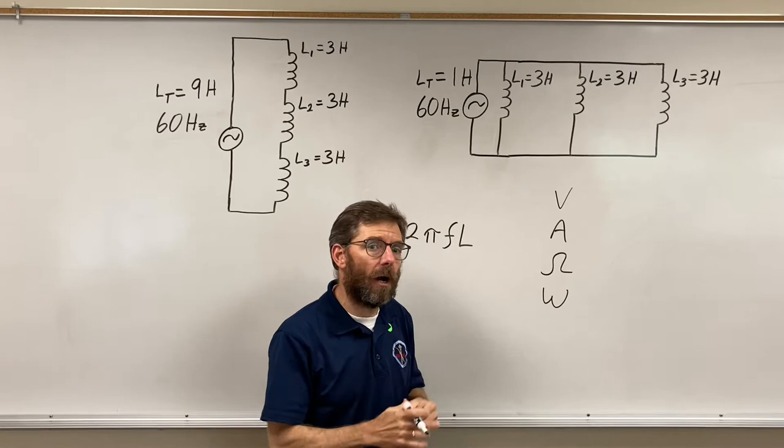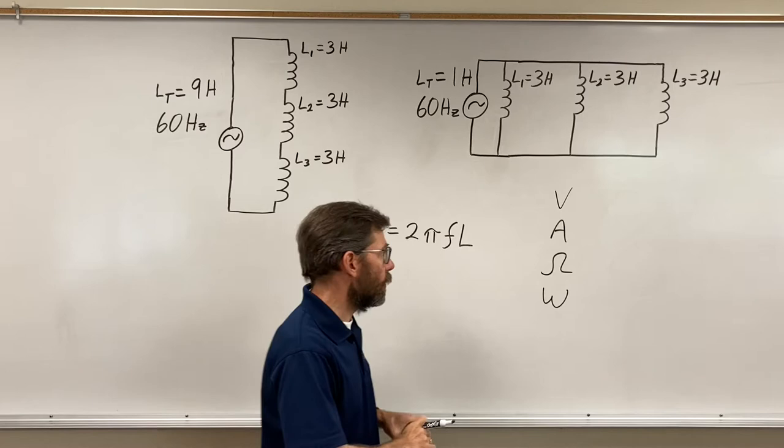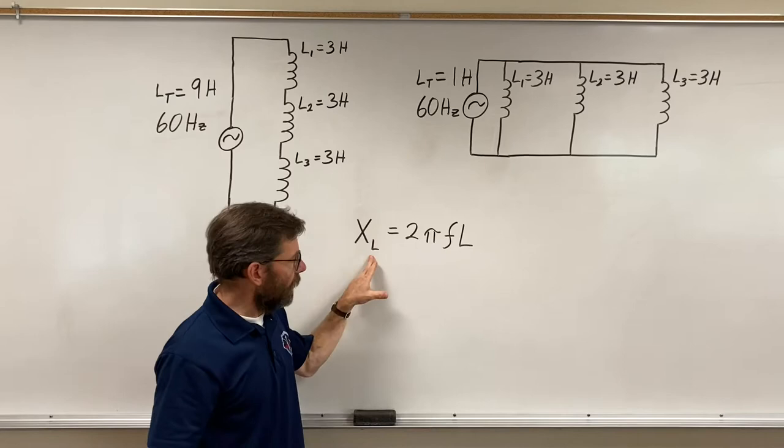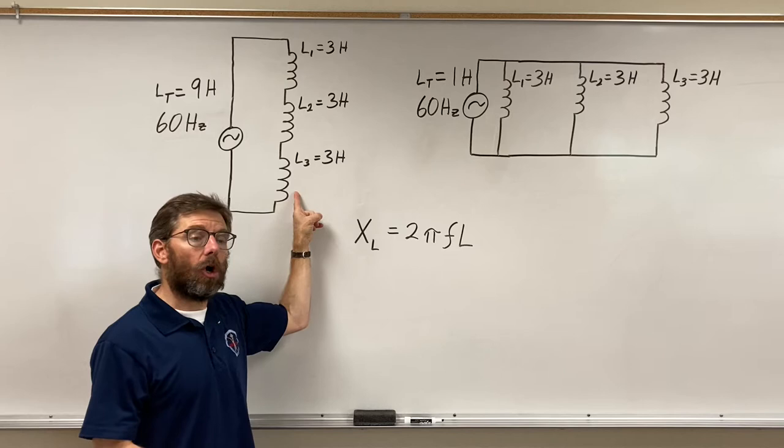But nowhere in here is Henry's. I don't have an equation to put in Henry's to figure out how much current these circuits will allow, so we have this formula. It's what we use to determine how much opposition an inductor will cause in a circuit as the voltage pushes. What will that inductor push back?